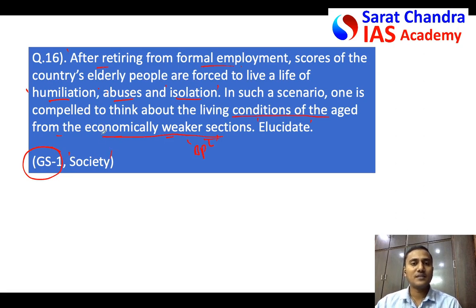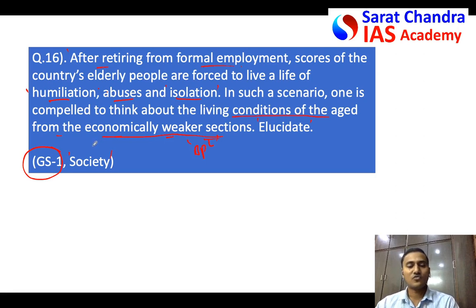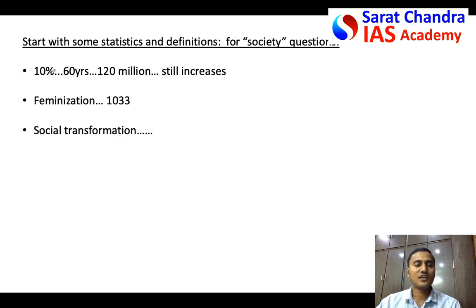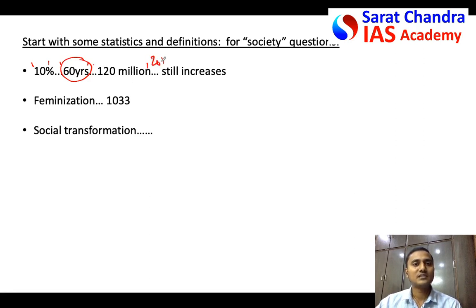For society-based questions about old people, women, or any other group, I would suggest you start with some statistics. If you know any statistics, throw them in the introduction, then explain them, and then explain the statements given in the question. For this question, regarding old people, you can write that almost 10 percent of the Indian population consists of people above 60 years of age, which we define as senior citizens, coming to nearly 125 million people.